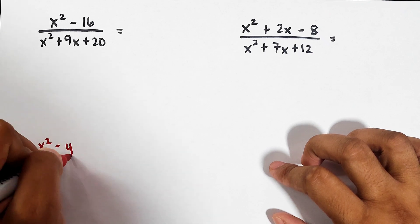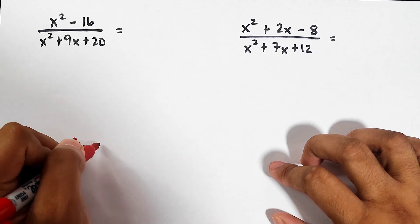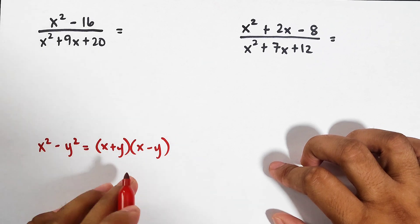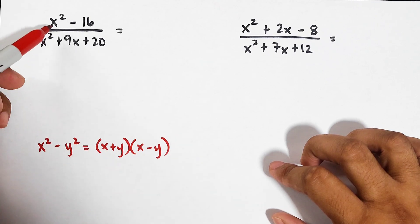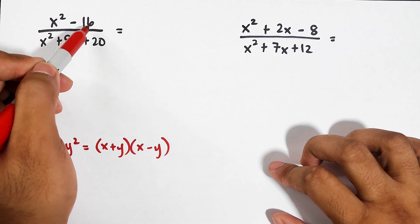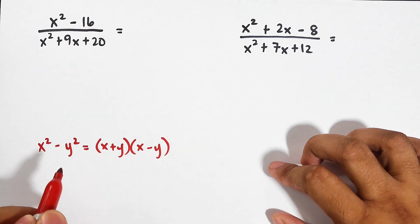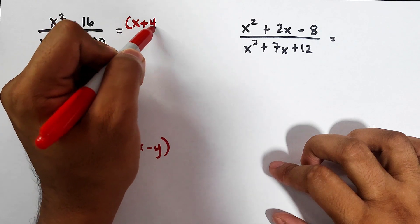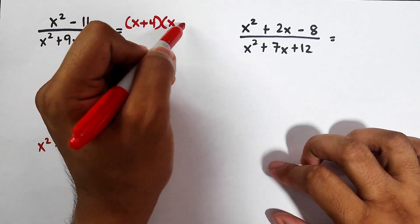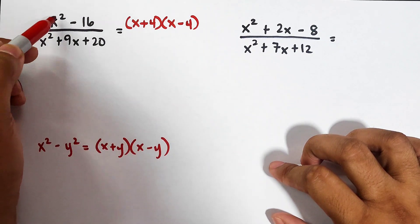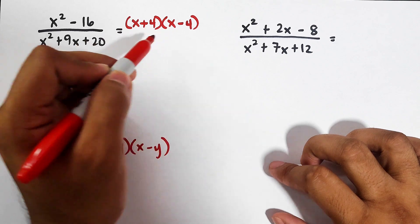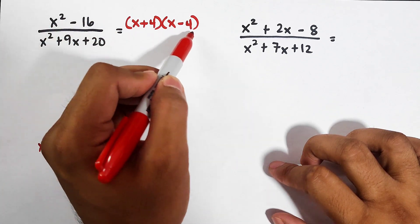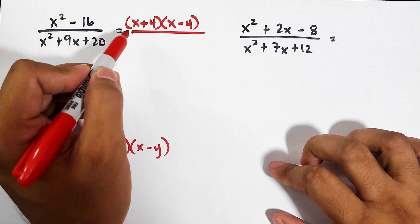The difference of two squares factors as x plus y times x minus y. Since x squared and 16 are both perfect squares, this fits the pattern. Taking the square root of x squared gives x, and the square root of 16 is 4, so it factors as x plus 4 times x minus 4.